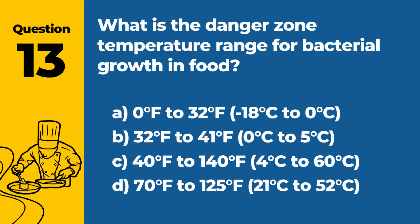Question 13. What is the danger zone temperature range for bacterial growth in food? a. 0°F to 32°F, -18°C to 0°C. b. 32°F to 41°F, 0°C to 5°C. c. 40°F to 140°F, 4°C to 60°C. d. 70°F to 125°F, 21°C to 52°C. Answer c. 40°F to 140°F, 4°C to 60°C. The danger zone temperature range for bacterial growth in food is between 40°F and 140°F, 4°C and 60°C.